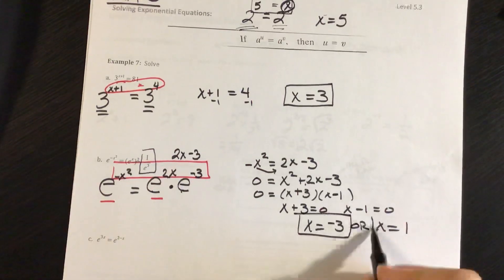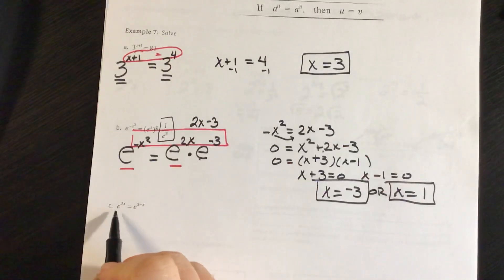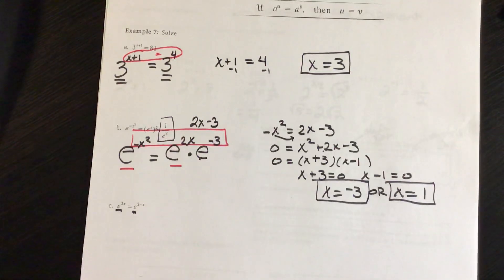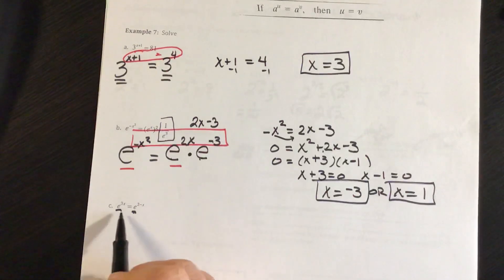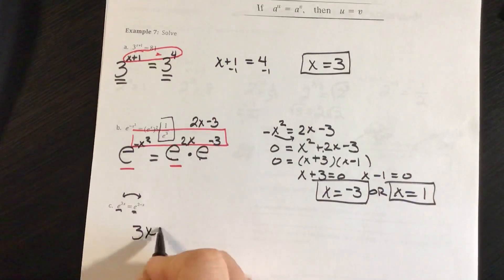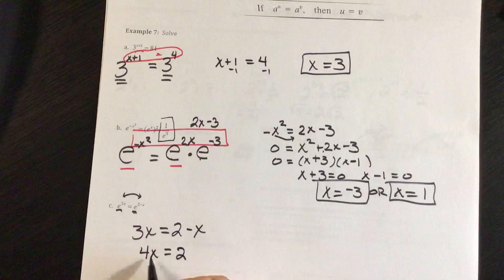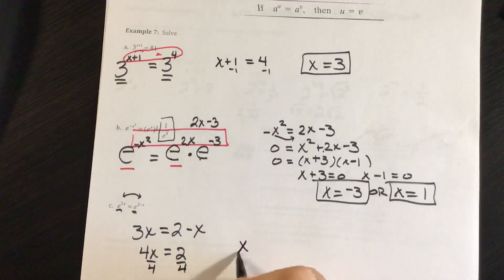So in this case, I've got two solutions that would give me the correct answer. All right, in part C, I have both of these are in base e. So remember e is just a constant number, 2.7 something. But since I have the same base, my exponents are equal. So I have 3x equals 2 minus x. So if I add x to both sides, I'm going to have 4x equals 2, divide by 4, and x is 1 half.